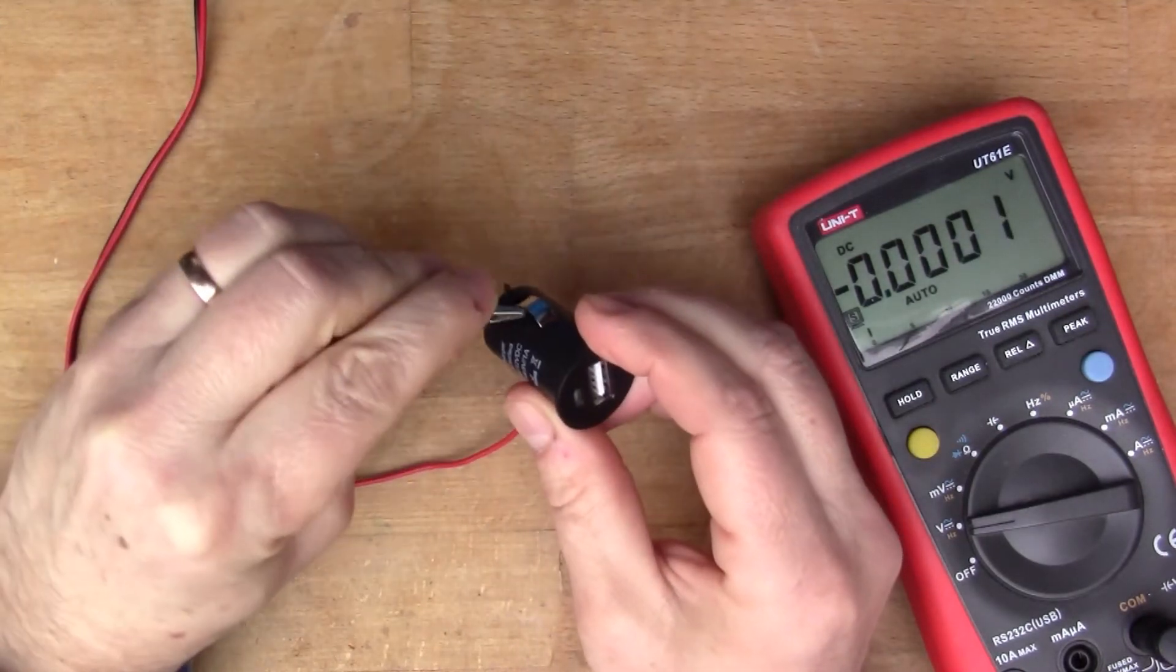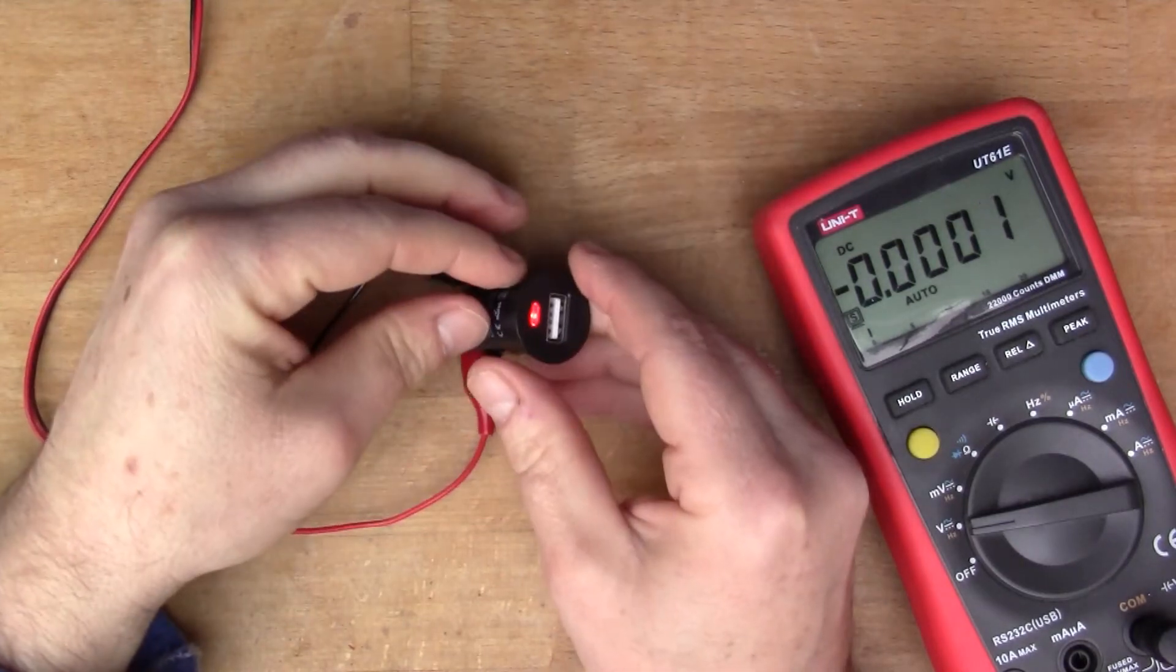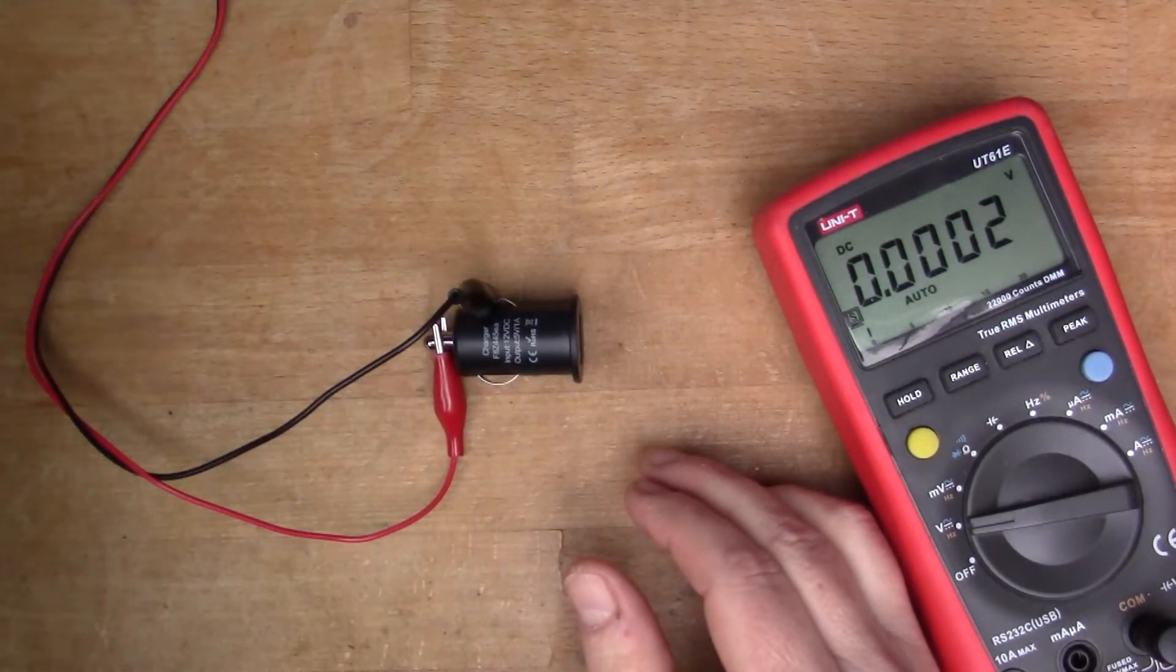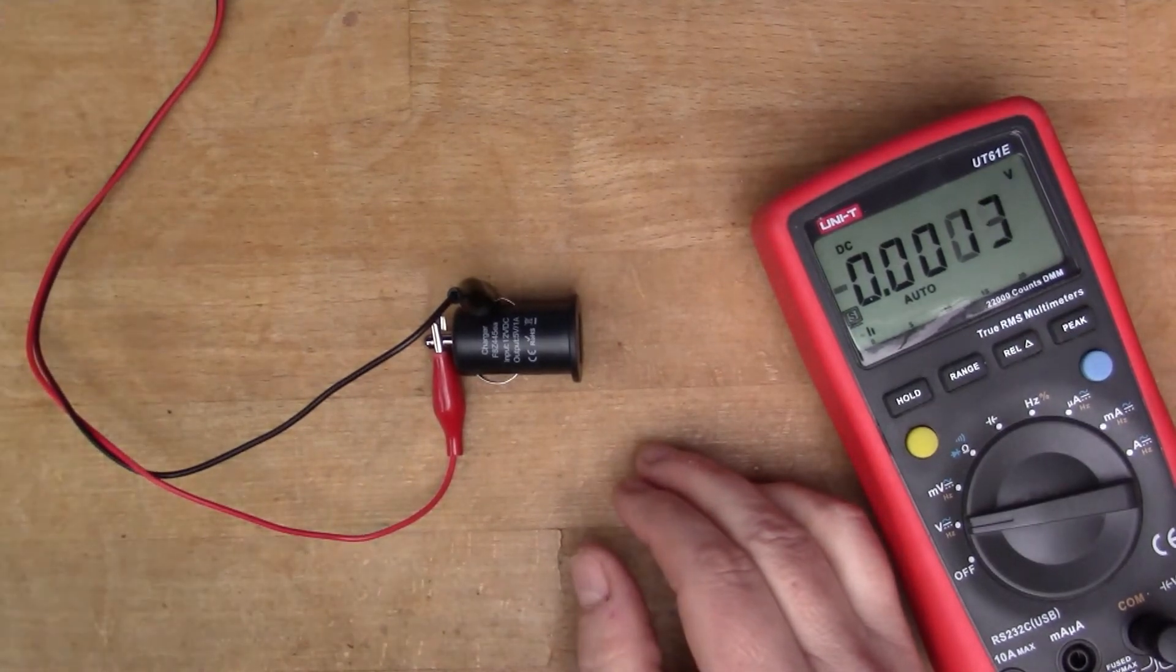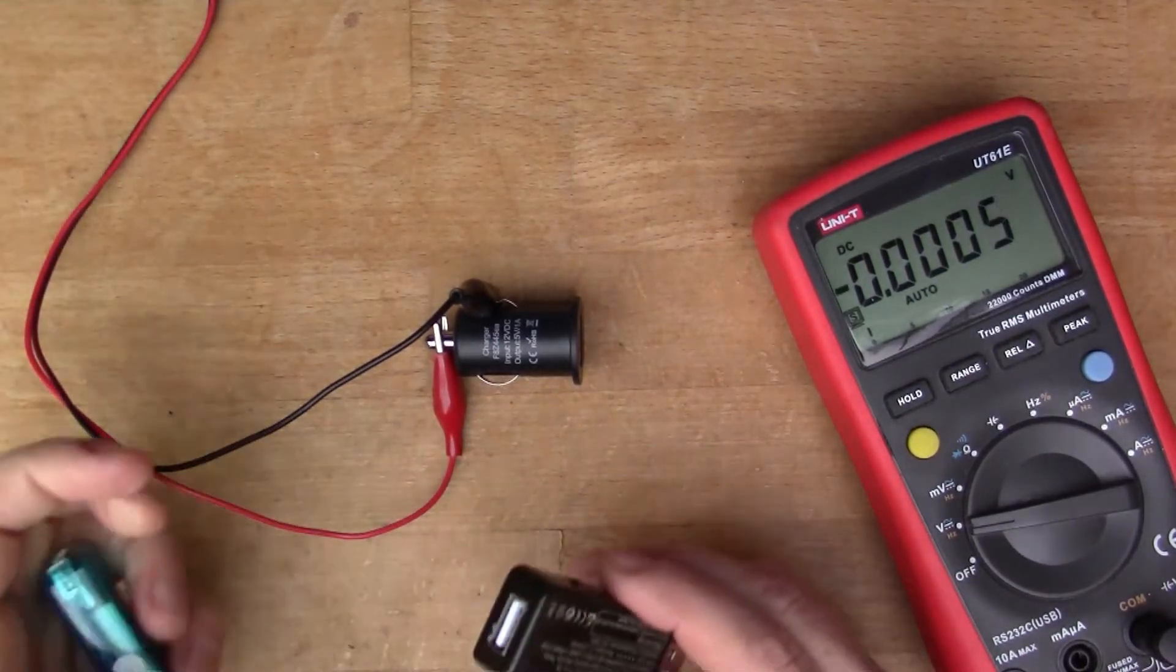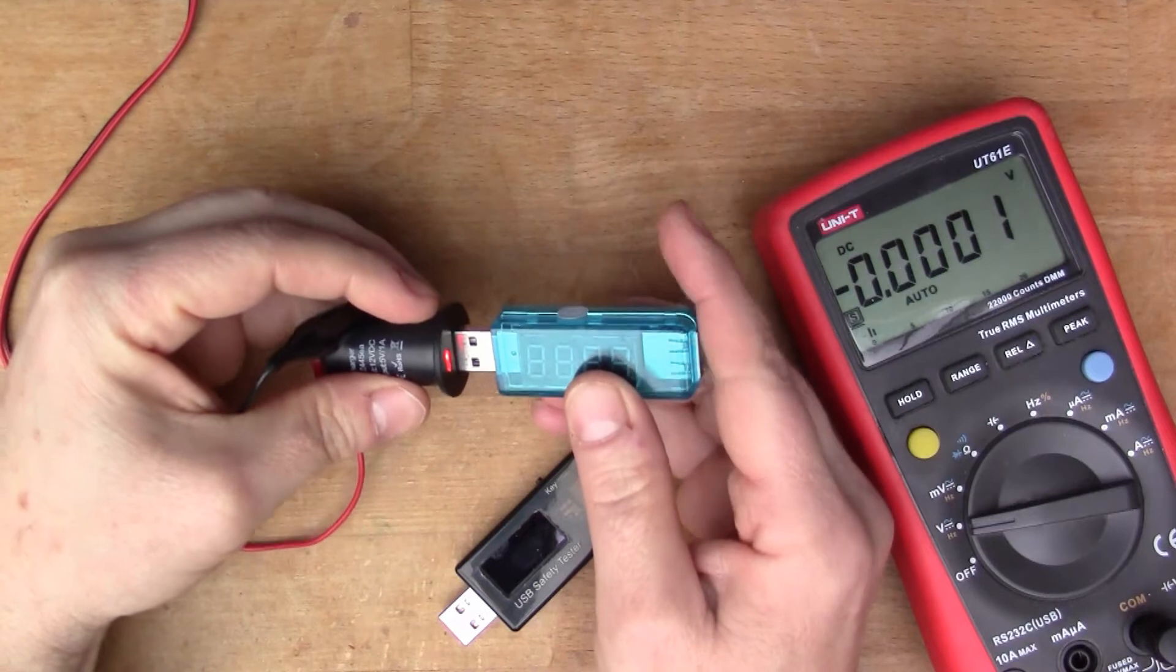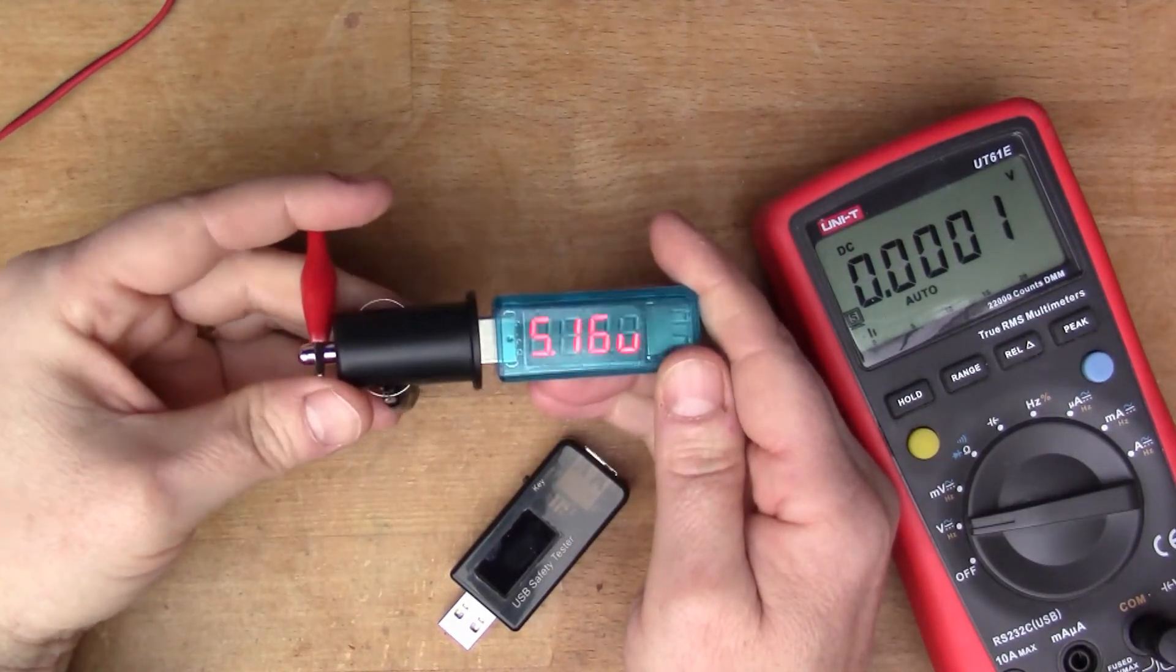So 13 and a half volts we've got there. I'll put the positive on the end there and the negative on the barrel on the side. So we have a red lead there.